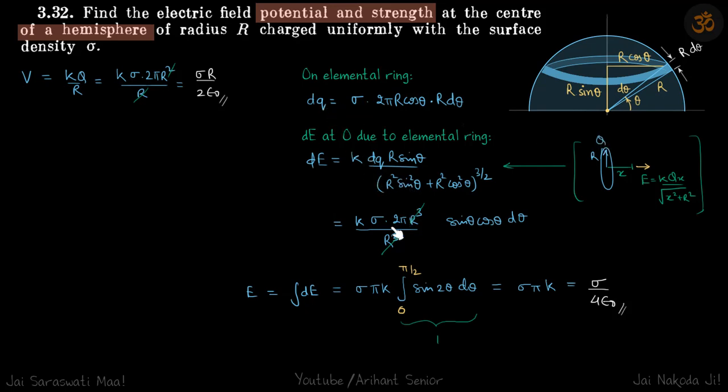We get this and it simplifies to k sigma 2π sin θ cos θ dθ. Further simplifying, take 2 inside - sin θ cos θ is sin 2θ. The integral of sin 2θ from 0 to π/2 is 1, which gives our total field as sigma/(4ε₀), which is our answer.